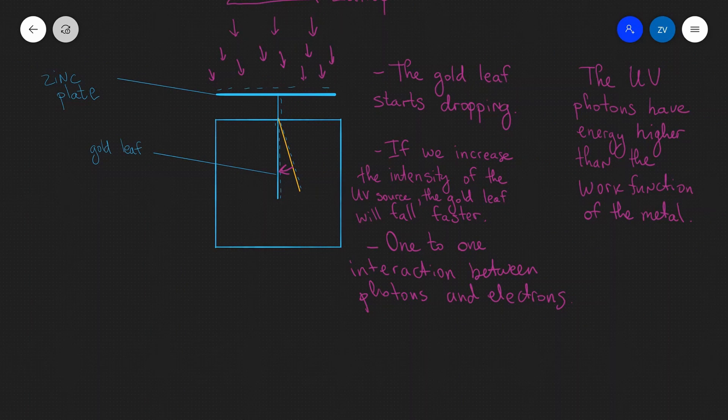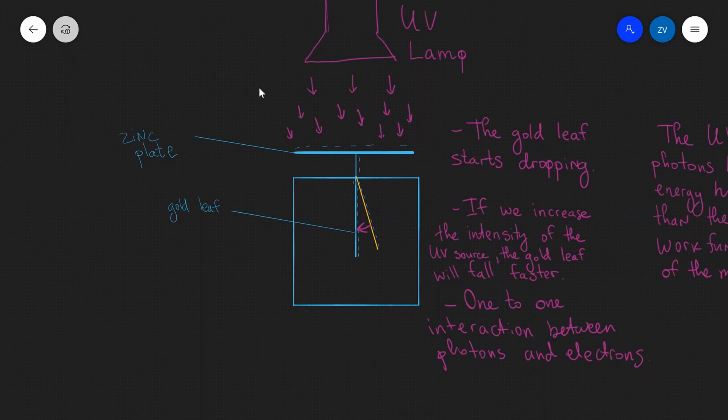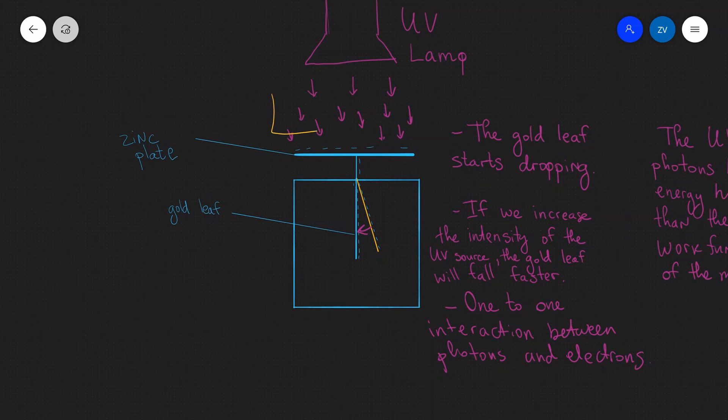Additionally, we may also be asked in an exam what happens if we insert something like a piece of glass. So we could put a piece of glass in there. Well, glass actually absorbs UV light. So if that's the case, the gold leaf will remain in the same place.